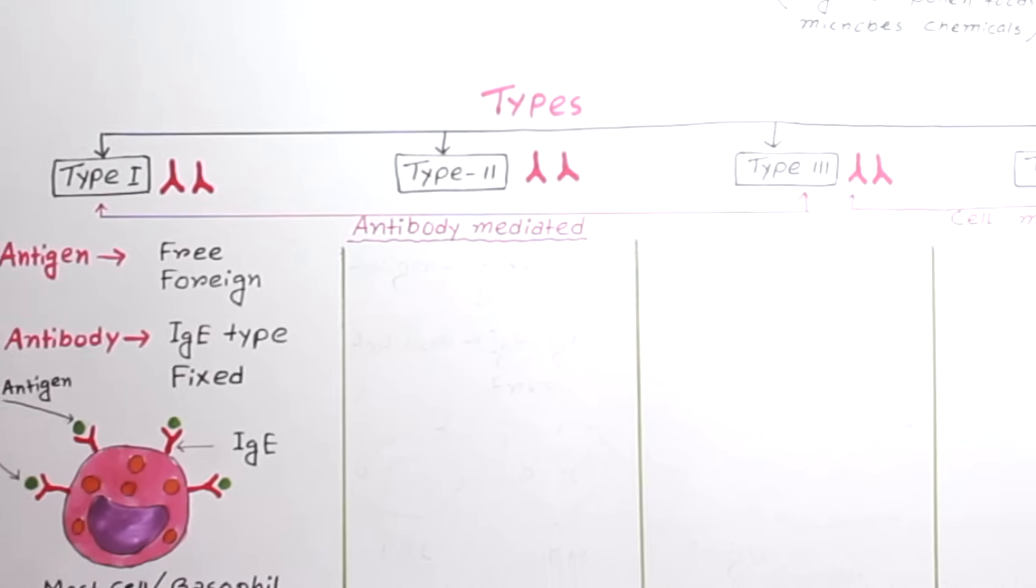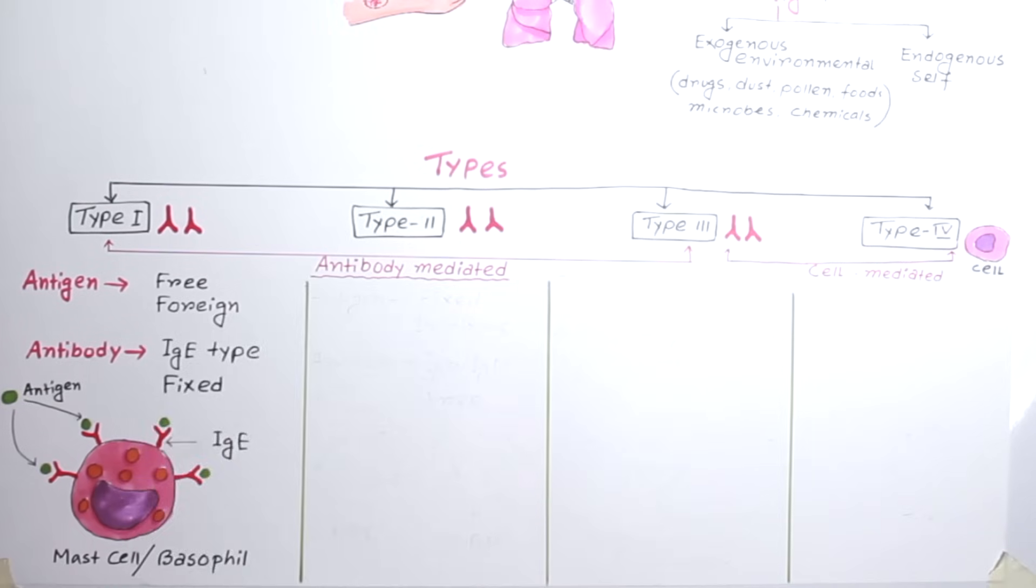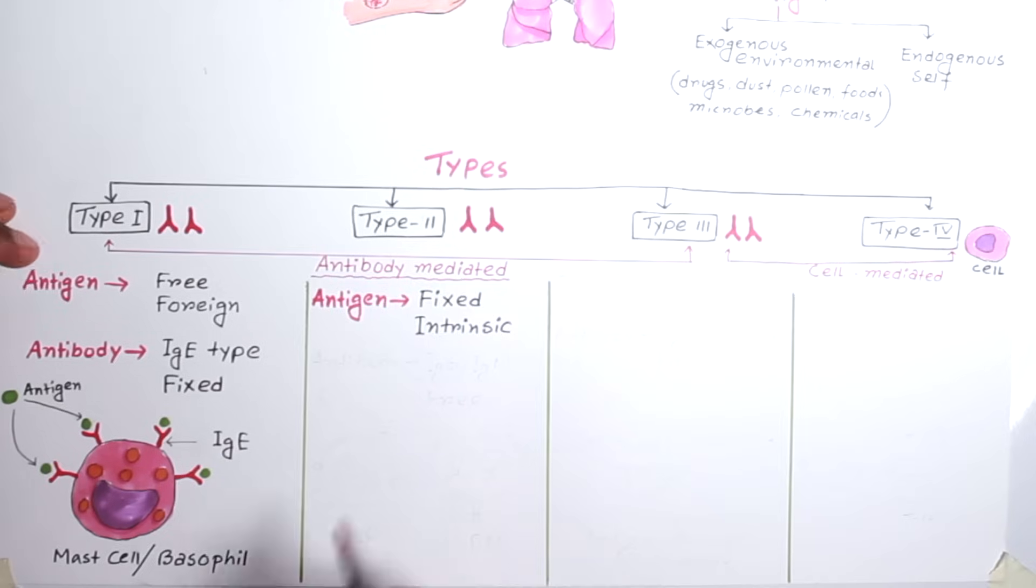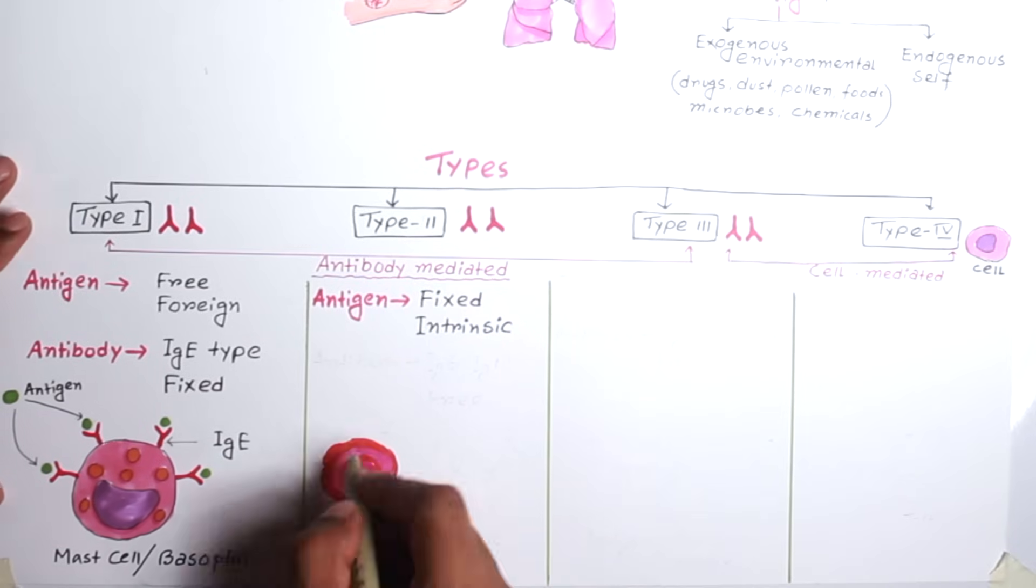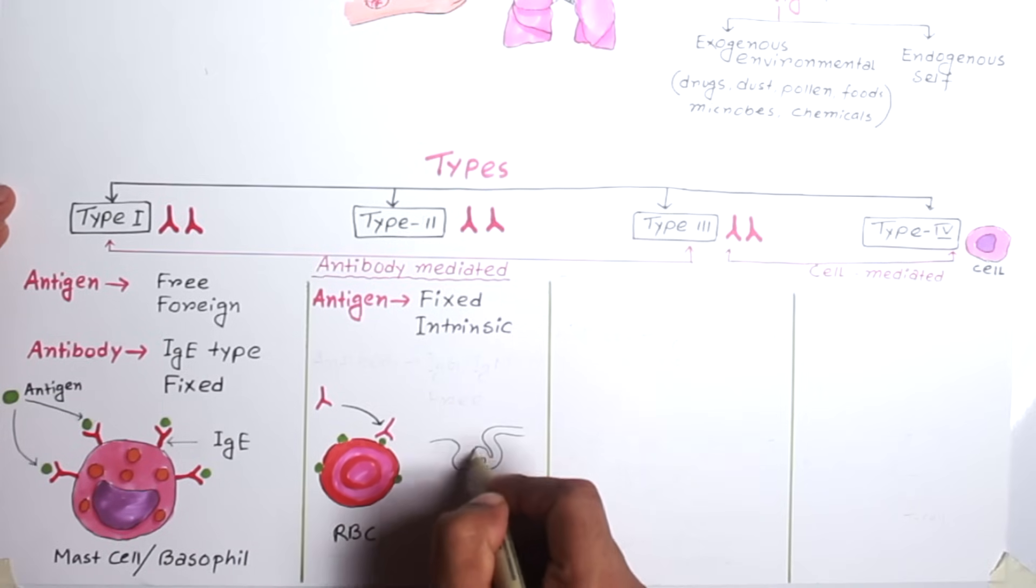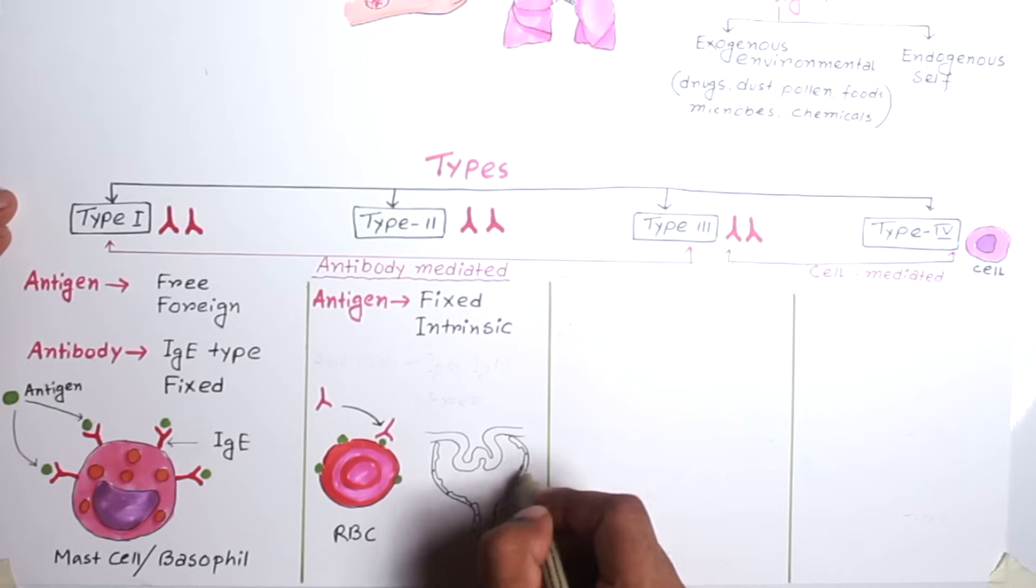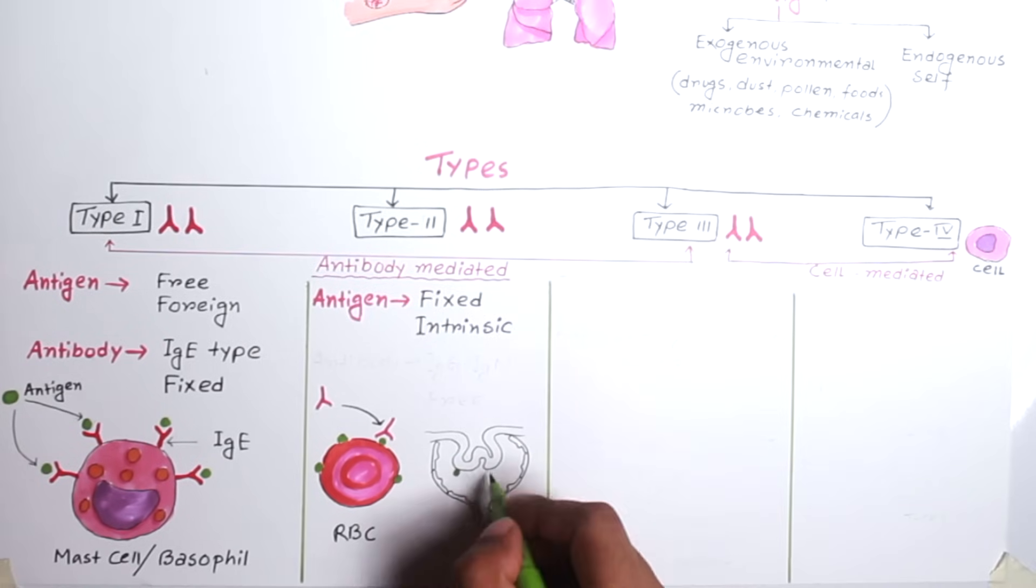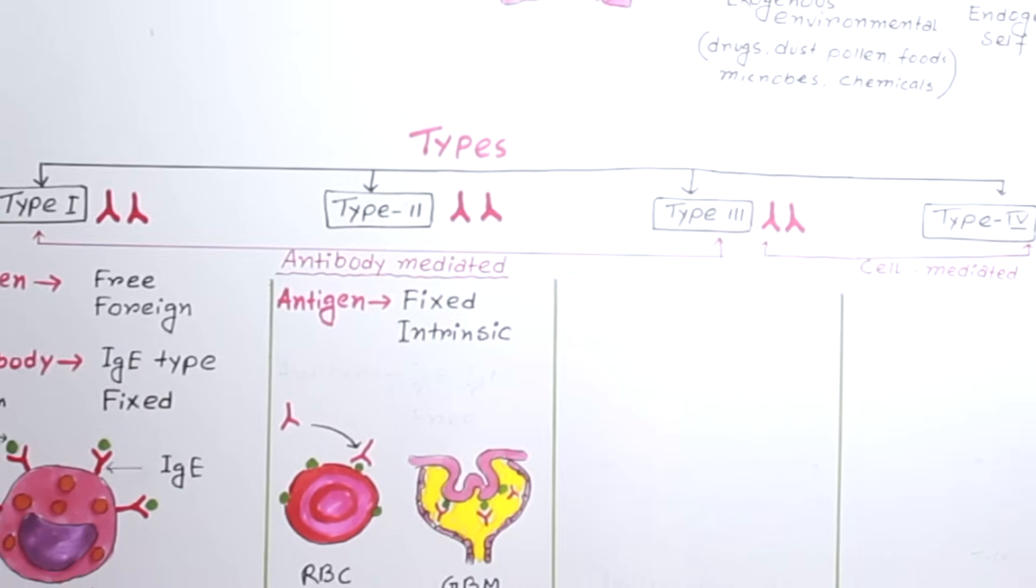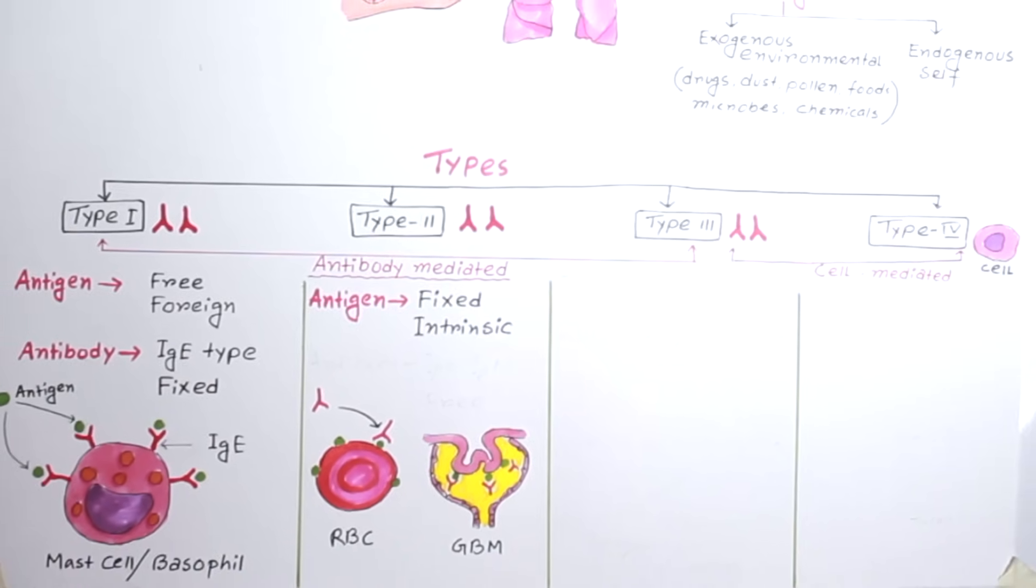Now, let's come to the Type 2 hypersensitivity reaction. Here antigen is always fixed and intrinsic to the tissue on which reaction occurs. For an example, if antigen present on the RBC, the reaction will occur on the RBC only. If it is present on the glomerular basement membrane, the reaction will occur on the glomerular basement membrane only. So, in case of Type 1 hypersensitivity reaction, the antigen is free and foreign. But in case of Type 2, it is just opposite. The antigen is fixed and intrinsic to our tissue.